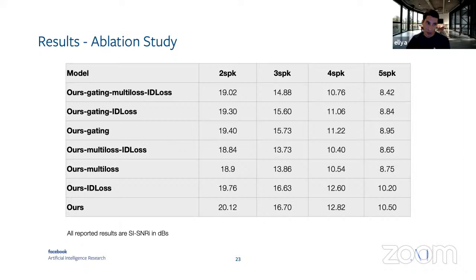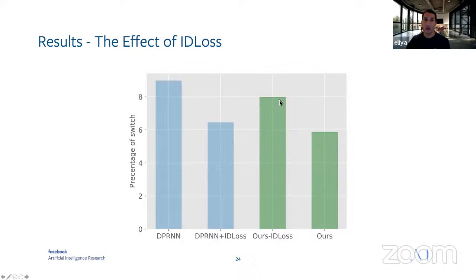We also measure the effect of the ID loss by counting how many times the speaker flips within the same output channel, which is an undesirable behavior. Without the ID loss, this speaker-switching can occur frequently. Applying our ID loss reduces this phenomenon by two percentage points.